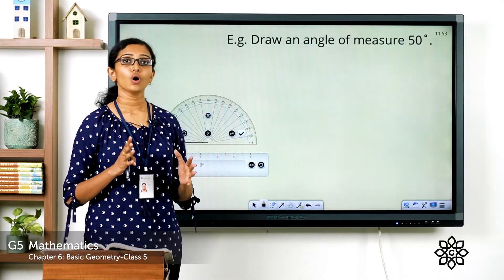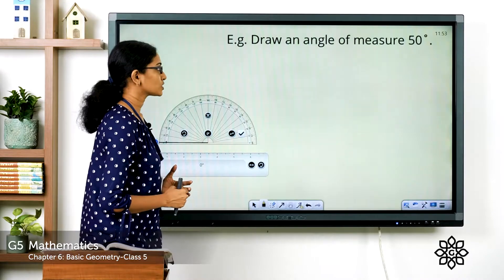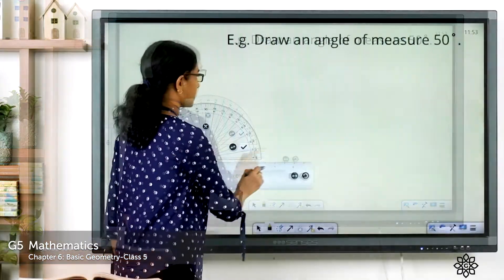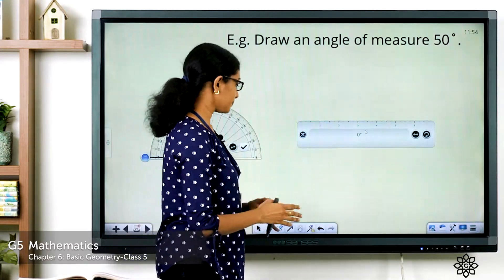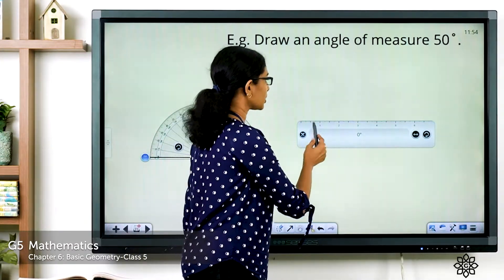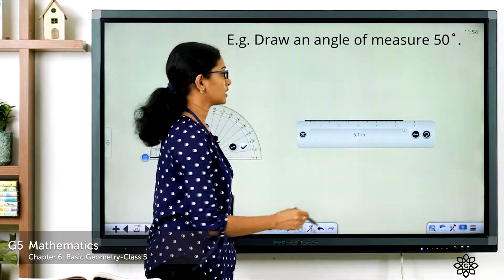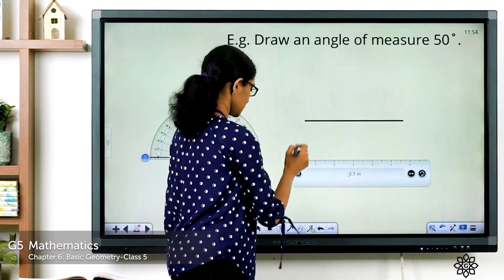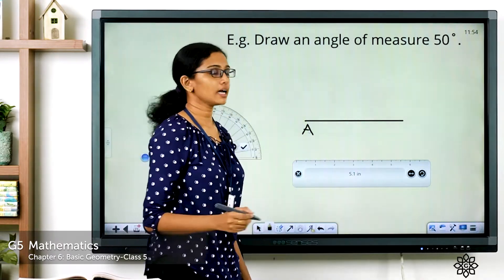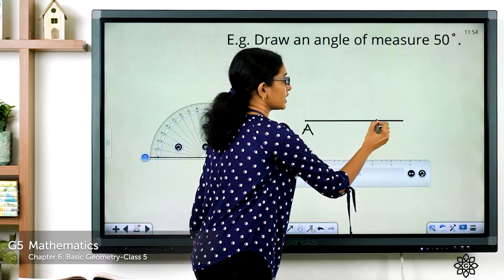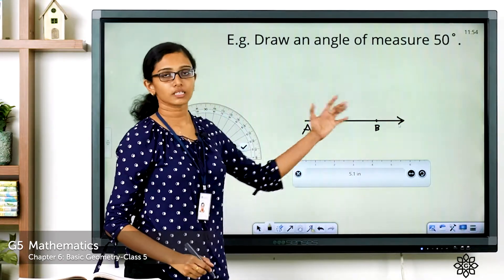The first step is to draw the lower arm of the angle. Take your ruler and place it horizontally on the paper, then draw a line using your ruler. Mark the starting point — let it be A — and another point, let it be B, and an arrow to represent that this is a ray.